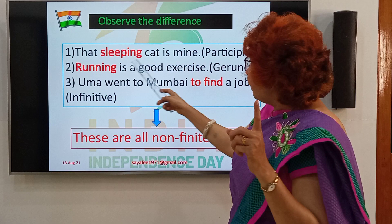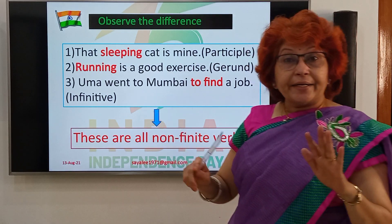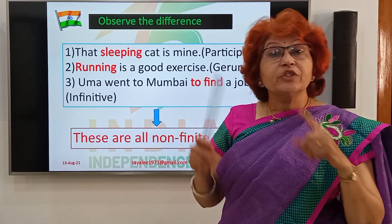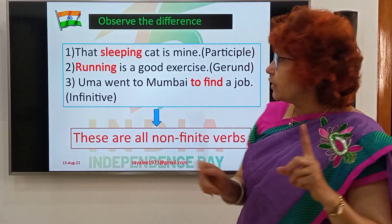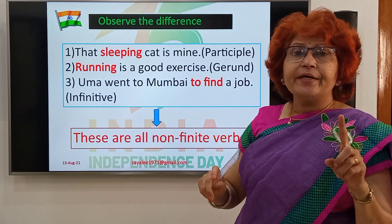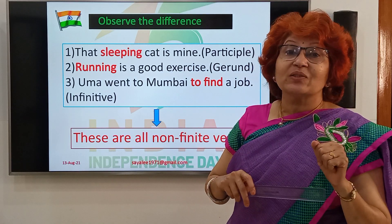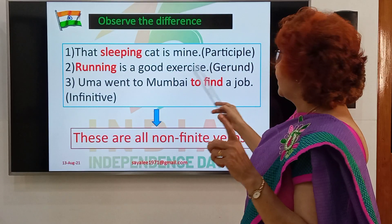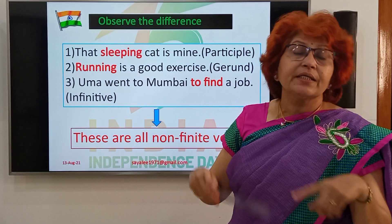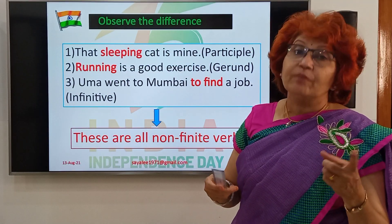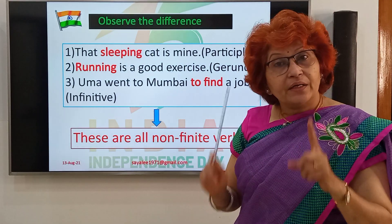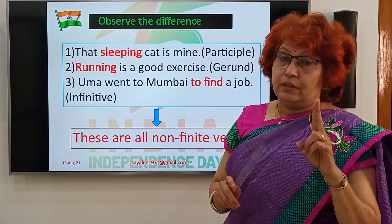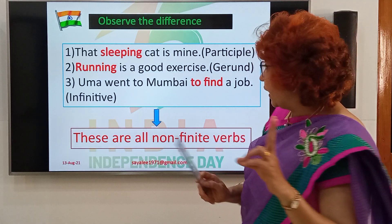That sleeping cat is mine. 'Cat' — 'sleeping cat' — the sleeping cat is mine. 'Sleeping' is a non-finite verb, but here it functions as an adjective — it describes the noun 'cat'. It is a present participle, and it works as an adjective in this sentence. An adjective goes alongside the noun in this way.